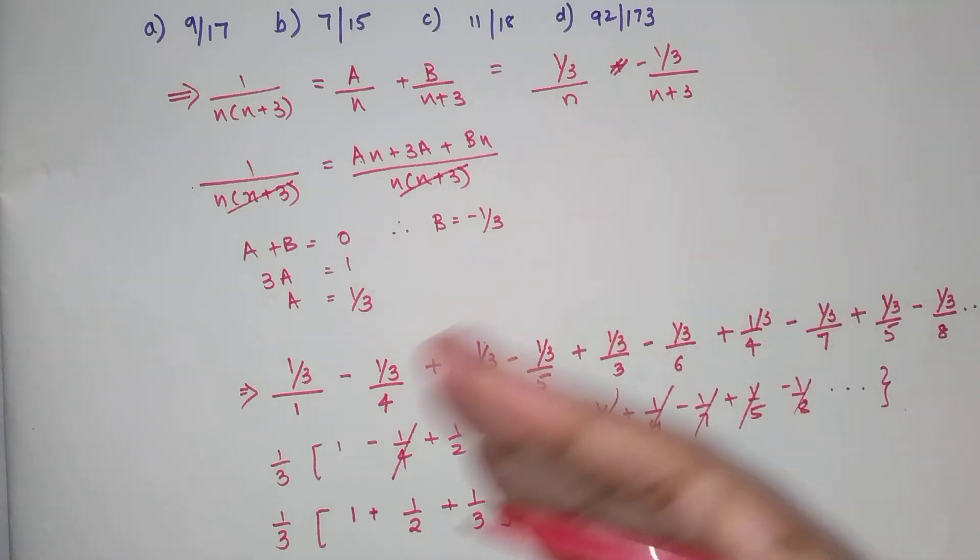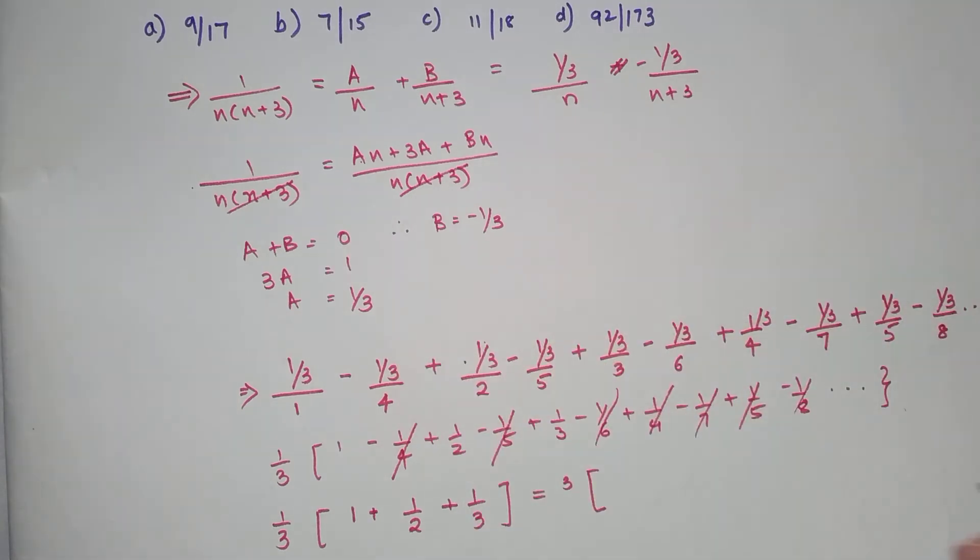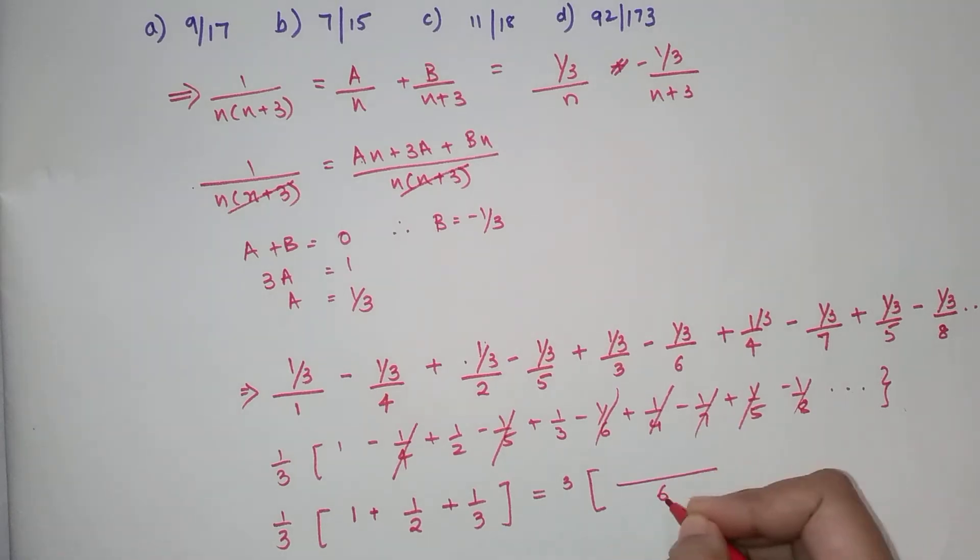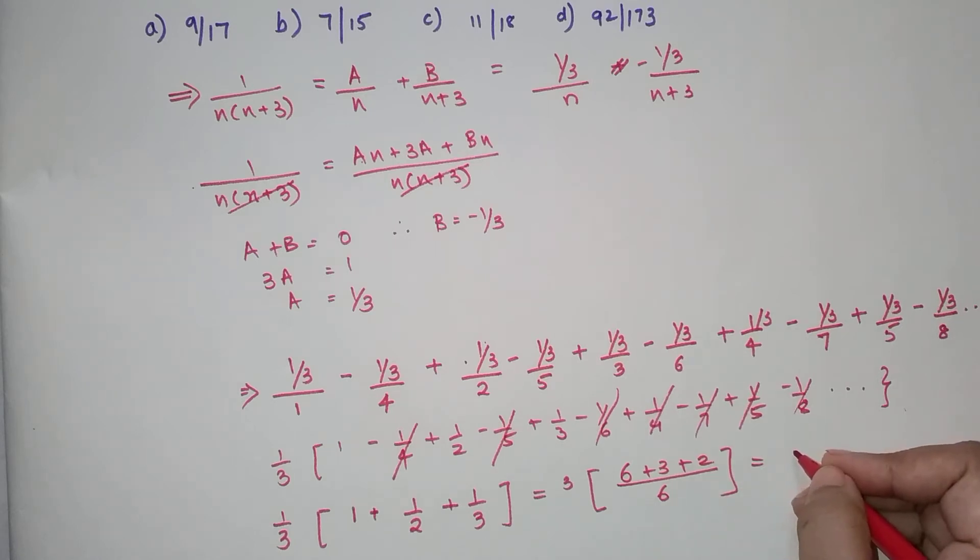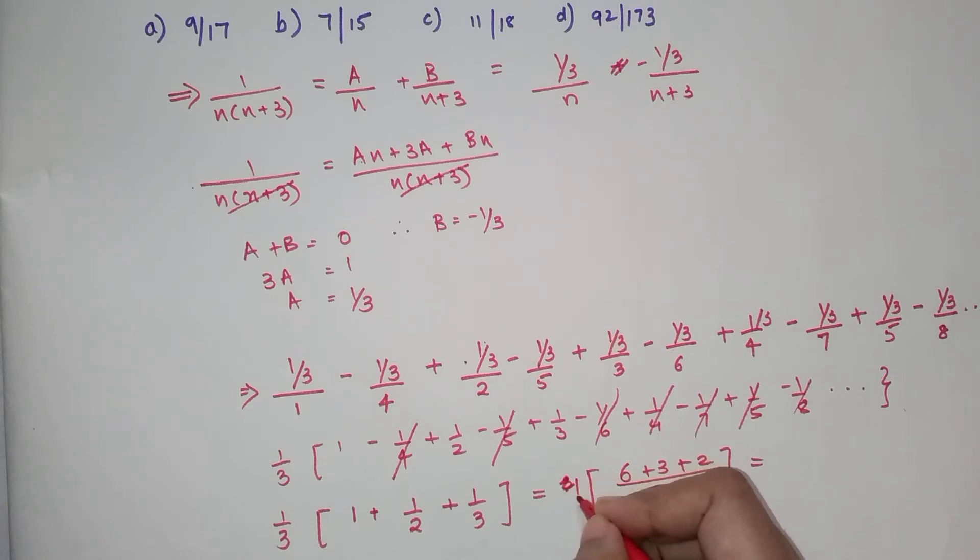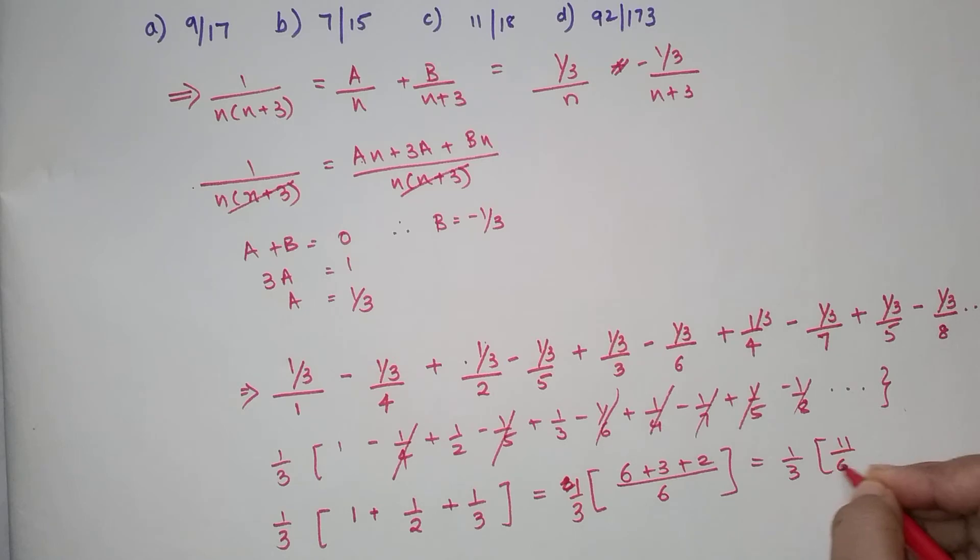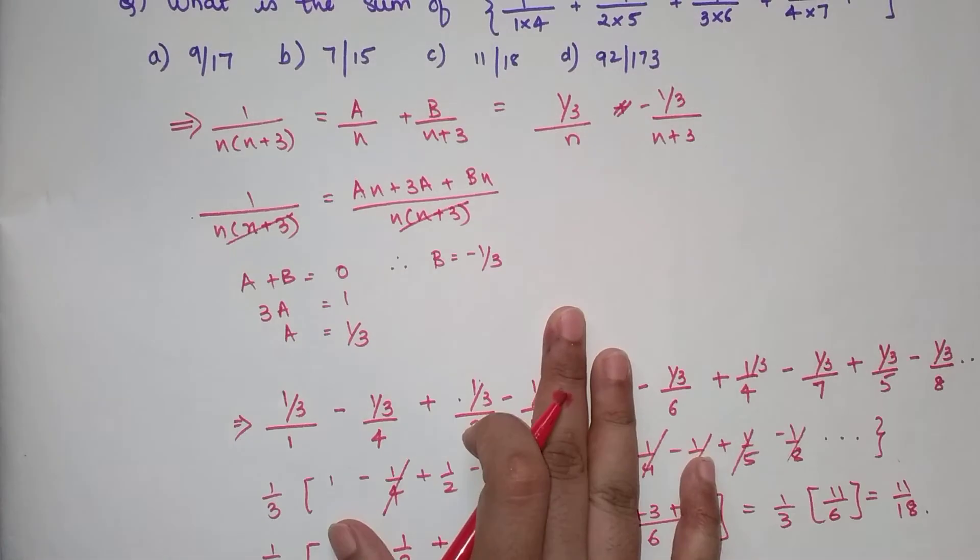So here we will take the LCM. We have 6 plus 3 plus 2, so that's 11 upon 6. 1 upon 3 times 11 upon 6, that becomes 11 upon 18.